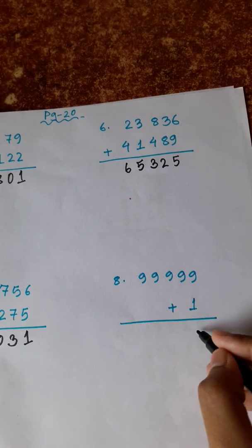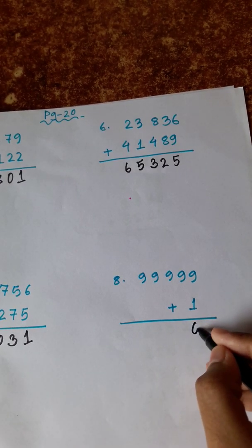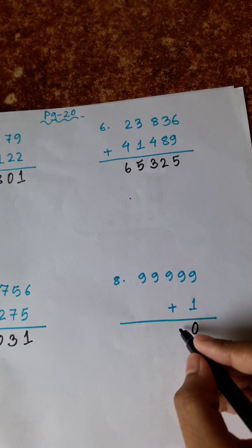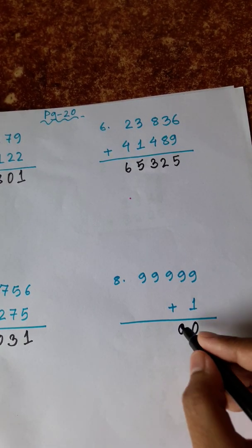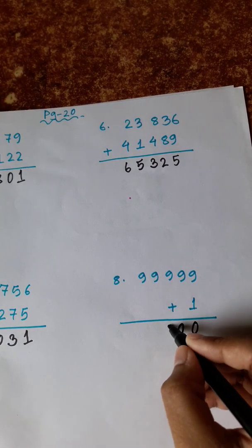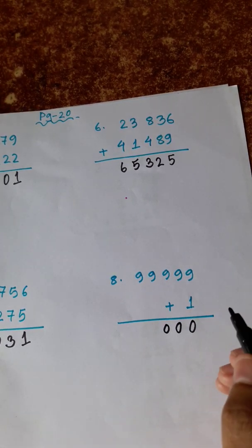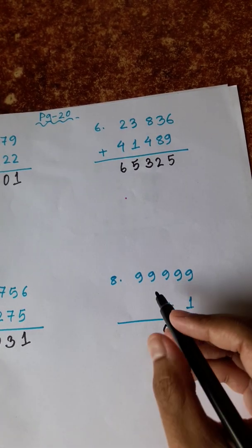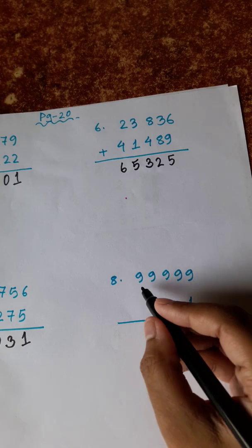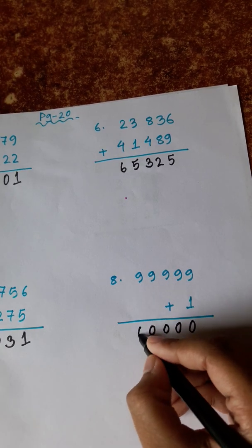9 plus 1 is 10. Drop the 0, carry the 1. 9 plus 1 is 10 — drop the 0, carry the 1. This is repeated to demonstrate the carrying concept: 9 plus 1 equals 10.